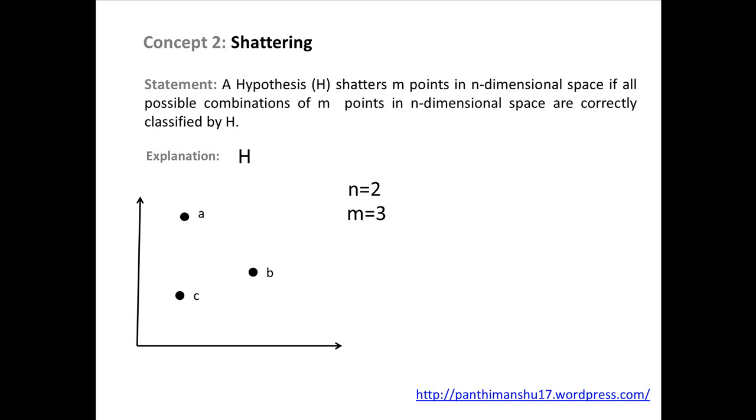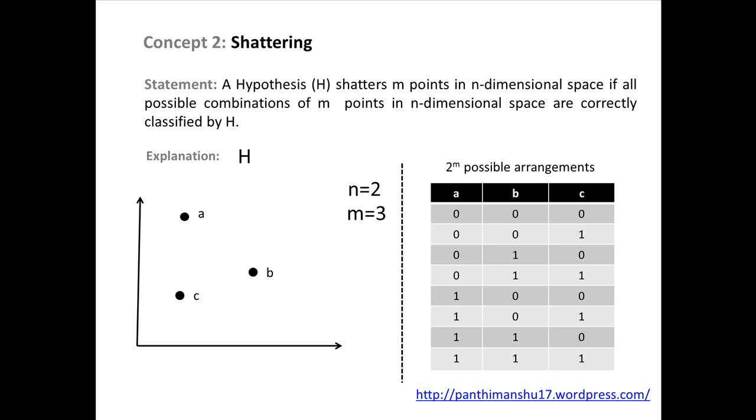These points can take only two values, either 1 or 0. Value 1 denotes class 1, and value 0 denotes class 0. As these three points can take only two values, there are eight possible combinations of these points, as shown in table. Now, any straight line can correctly classify all of these possible combinations. For example, if a is in class 0, and b and c are in class 1, then this line classifies them.